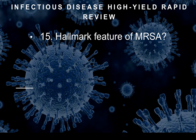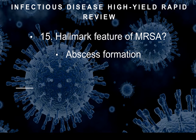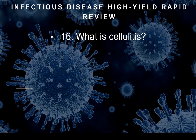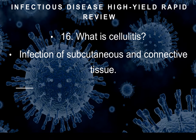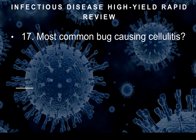Question thirteen: What is the hallmark feature of MRSA? The hallmark feature of MRSA is abscess formation. A patient comes in with an abscess — most likely cause is MRSA. Question fourteen: What is cellulitis? Cellulitis is a deep tissue infection — subcutaneous and connective tissue infection. Question fifteen and sixteen: Most common bug causing cellulitis is again staph aureus — staph is almost always with infectious disease unless you know otherwise.